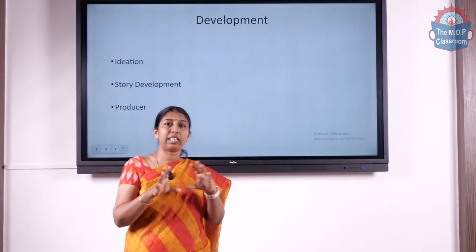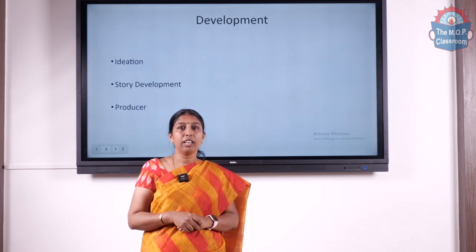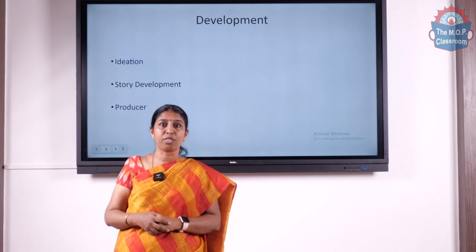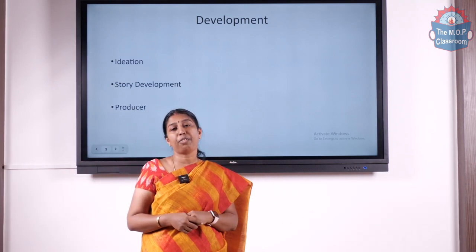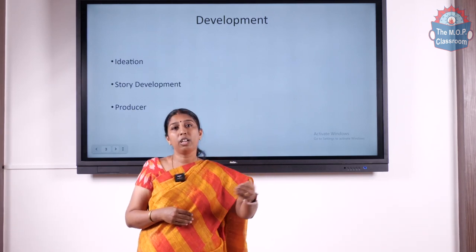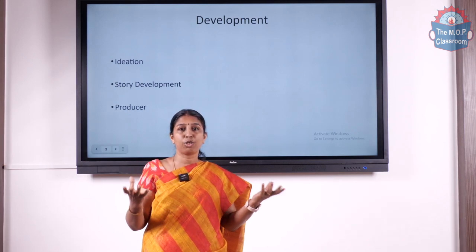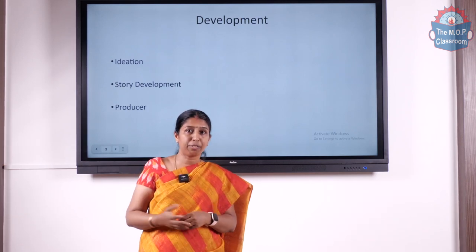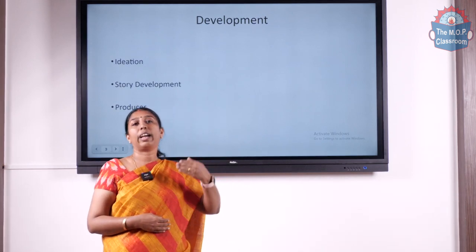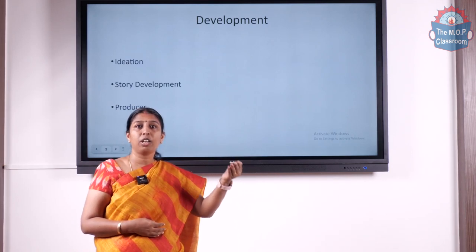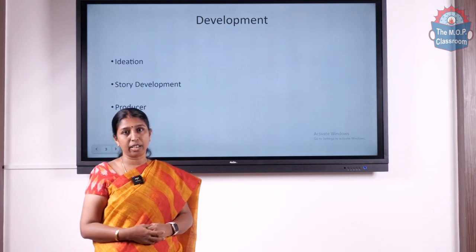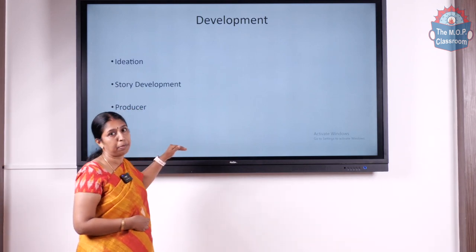Once a story and a speculative script are ready, the film making process will not straight away get into the actual shooting process. It has to go through another important phase where the director or the person who writes the script has to approach a producer who will provide the funding, because without funds you cannot make a film. Film making is an expensive process. So once the story is developed you have to get in touch with a producer or financier who gives you the green signal to start production.